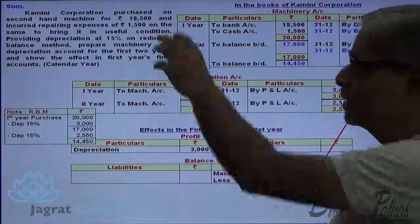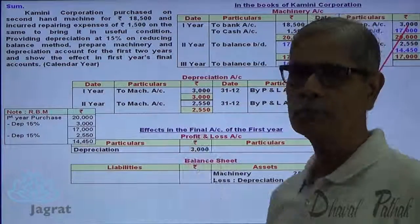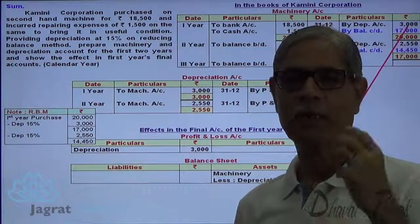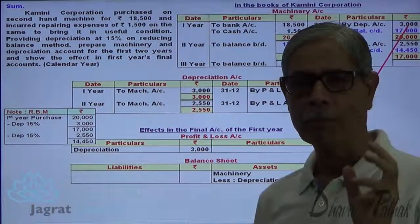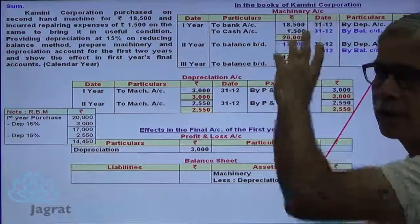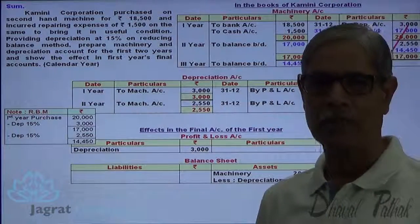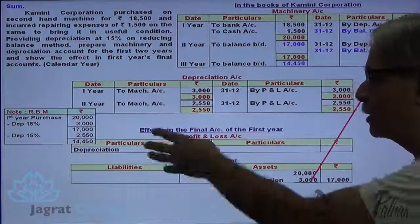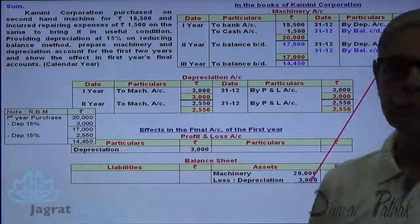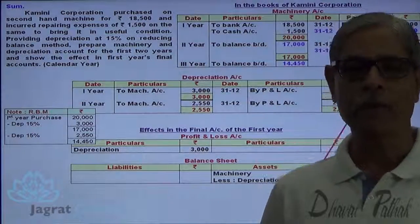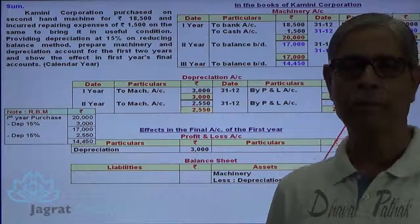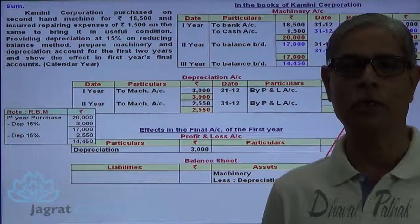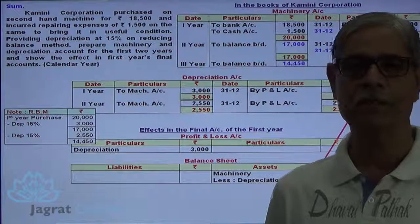So here is the sum and the working note prepared to calculate depreciation while solving it. I have mentioned the journal entries, and on the basis of those, the ledger posting is made to the depreciation account and machinery account. The effect of the depreciation adjustment on the final accounts is also demonstrated. I hope you have followed all these things — thanks to all of you.